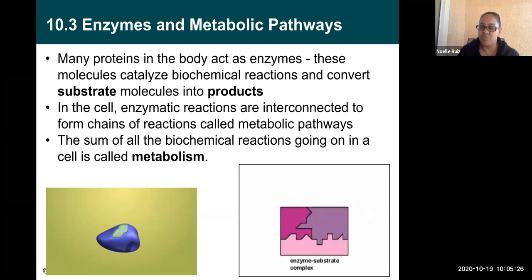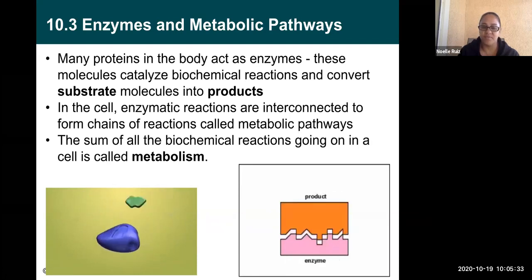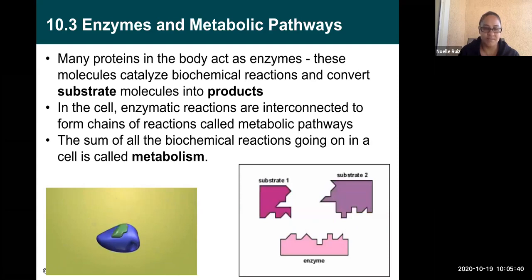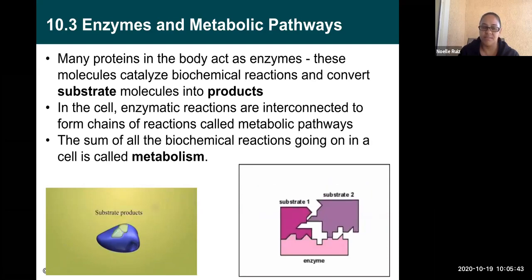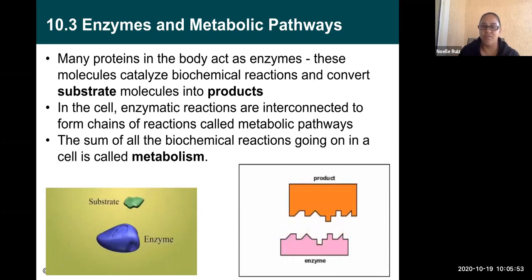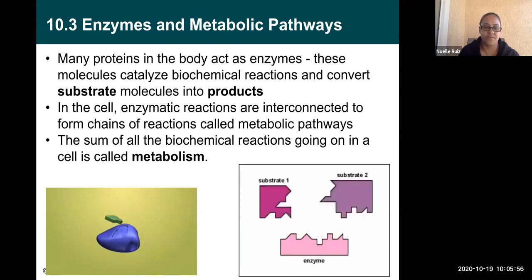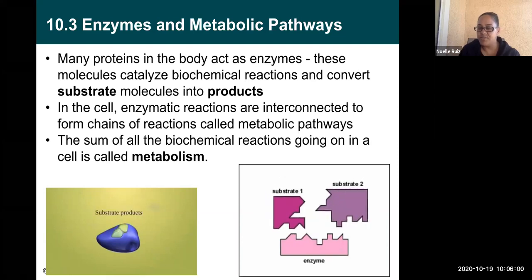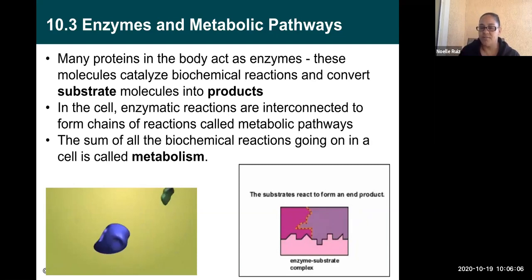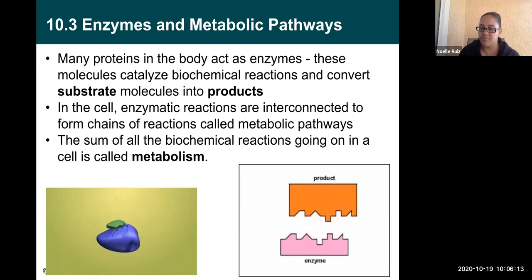Enzymes work basically in one of two ways. On the left, you have an enzyme and a substrate that come together at their active site and make a complex, and then the substrate gets cut in half — that happens over and over again in our bodies. On the right side, an enzyme can also take two substrates, glue them together, and produce a product different from what you started with.